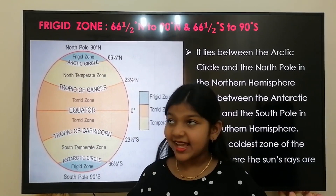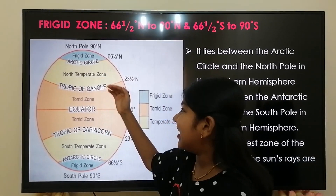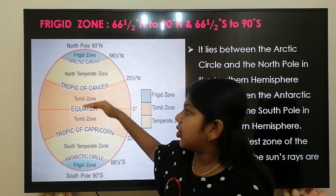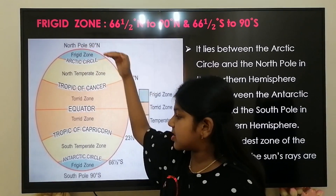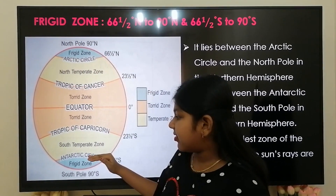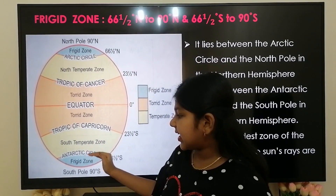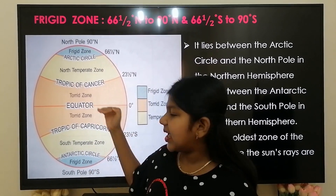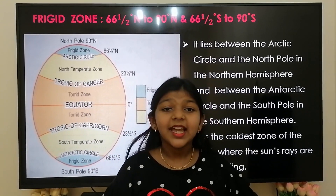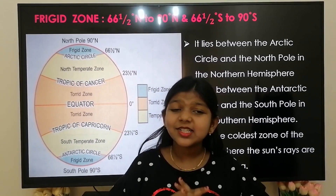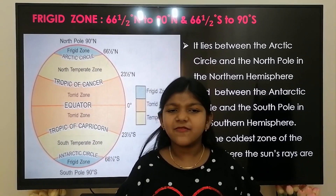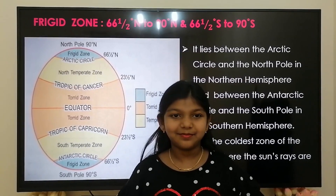Frigid zone lies between the Arctic Circle and the North Pole in the northern hemisphere, and between the Antarctic Circle and the South Pole in the southern hemisphere. It is the coldest zone in the world, where sun rays are very slanting.